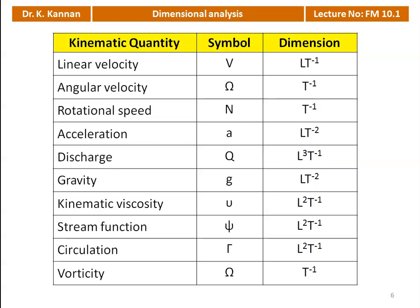Kinematic quantities: linear velocity has dimension LT⁻¹; angular velocity T⁻¹; rotational speed T⁻¹; acceleration LT⁻²; discharge L³T⁻¹ (cubic meters per second); acceleration due to gravity LT⁻²; kinematic viscosity L²T⁻¹; stream function L²T⁻¹; circulation L²T⁻¹; and vorticity T⁻¹.